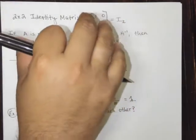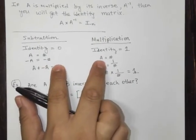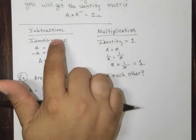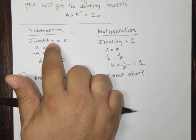So hopefully this makes sense, but if it doesn't, let's take a look at this real quick and try to understand. So when we're talking about the operation of subtraction, we know the identity is 0.